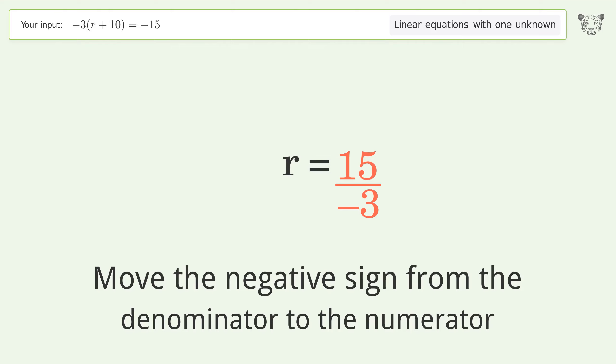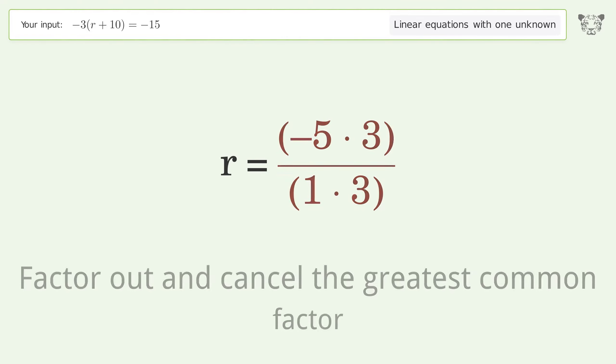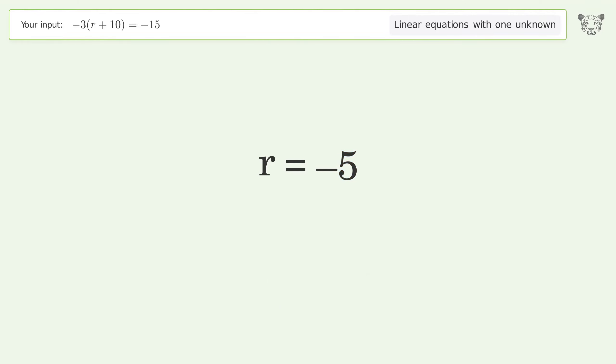Move the negative sign from the denominator to the numerator. Find the greatest common factor of the numerator and denominator. Factor out and cancel the greatest common factor. And so the final result is r equals negative 5.